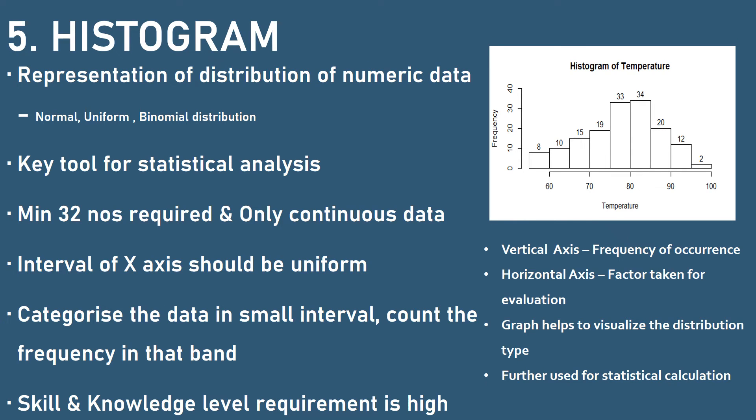The vertical axis is the frequency of occurrence. The horizontal axis is the factor taken for evaluation, with the index kept at a common equal interval. This graph helps to visualize the distribution type and is further used for statistical calculations.